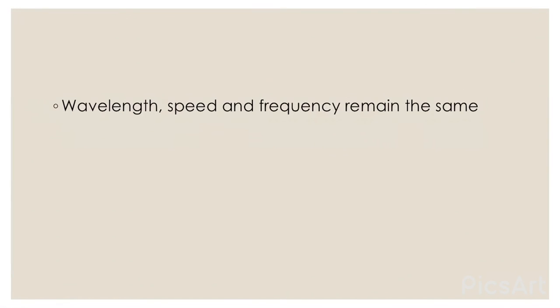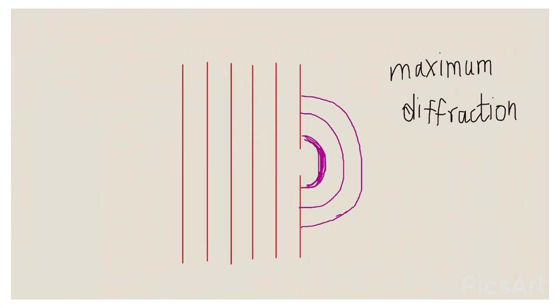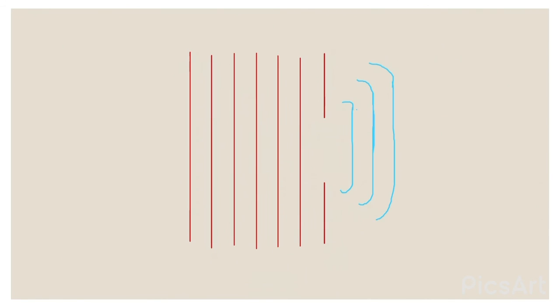The wavelength, speed and frequency remain the same for diffraction. This is a diagram of how maximum diffraction takes place. First the wavefronts are drawn, then here is the gap. If you see, the distance of the gap is almost equal to the wavelength, and when it is almost equal to the wavelength, maximum diffraction will take place.